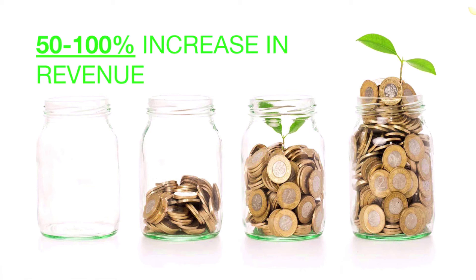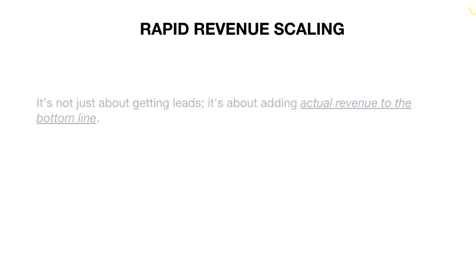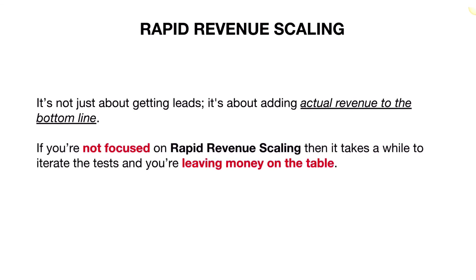I need you to understand that's not an extra 50 to 100% increase on what you're getting just now — that would be an extra 50 to 100% on top of what you gain if you follow the steps I've just talked about. So you can see this is a massive increase. Rapid Revenue Scaling helps you add in an extra 50 to 100% revenue so you can grow your team, get paid more, get more help so you don't have to spend so much time running your business. Instead, you'll have the revenue to allow you to focus on your business growth. It's not just about getting leads — it's about adding actual revenue to your bottom line. If you're not focused on Rapid Revenue Scaling, it takes a while to iterate the tests and you're just leaving money on the table.